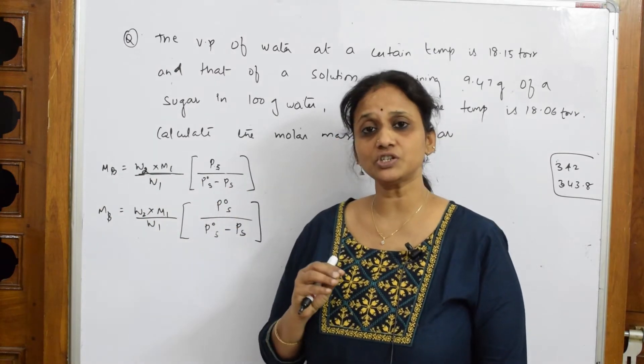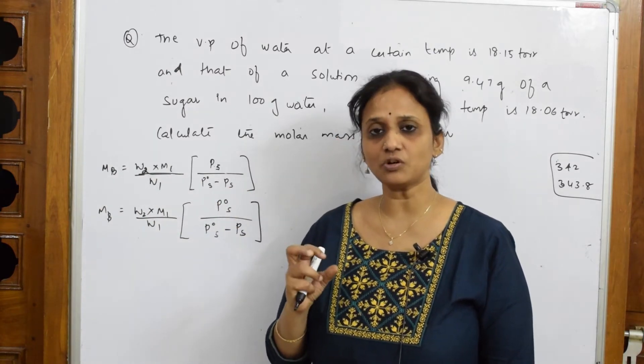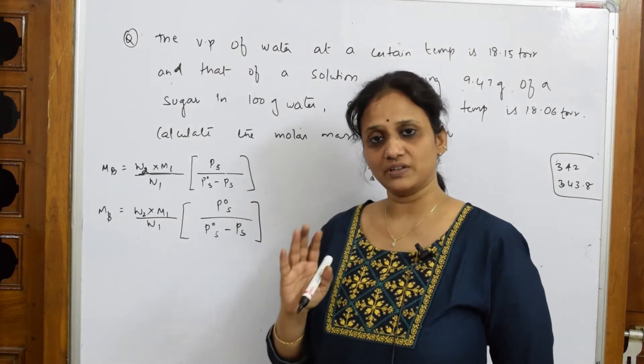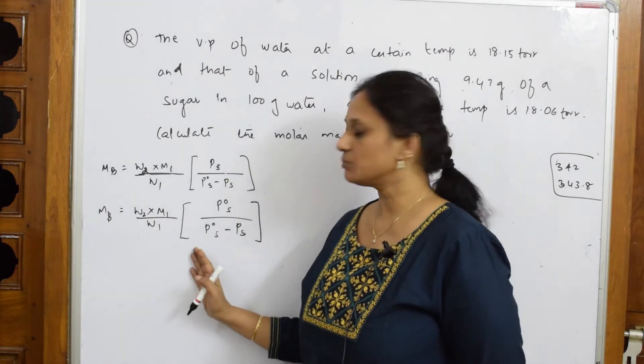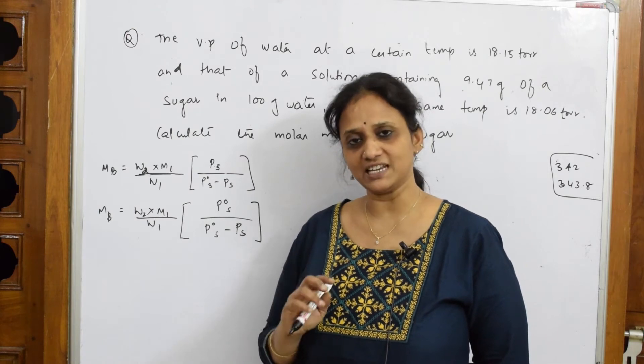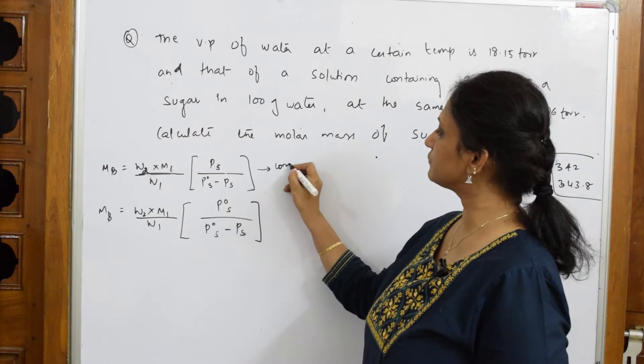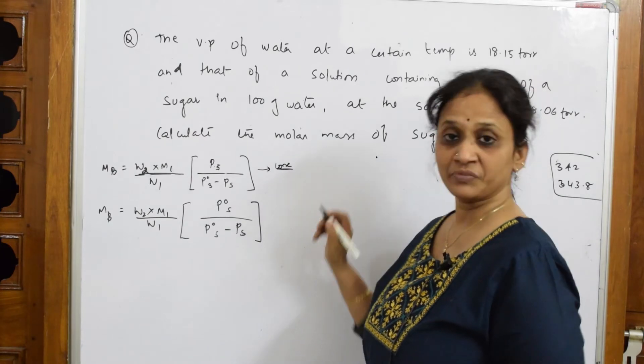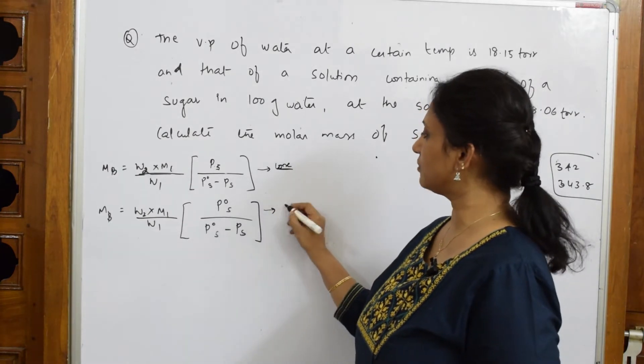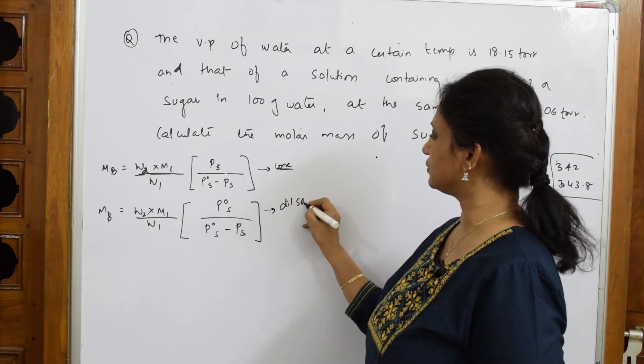This particular formula is for finding out the molecular mass of the solute. You can use this when the concentration of the solute is more, meaning the amount of solute is more. You can use this formula when the solute concentration is very less, that is in dilute solution. The first formula you can use for concentrated solution, and the second formula for dilute solutions.